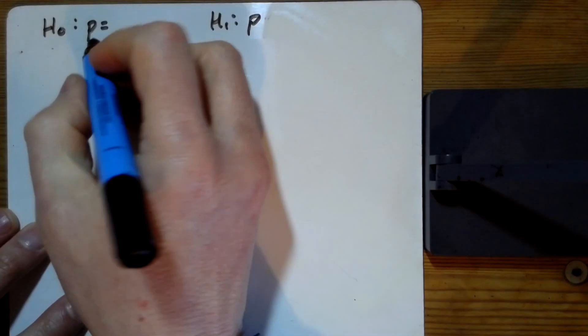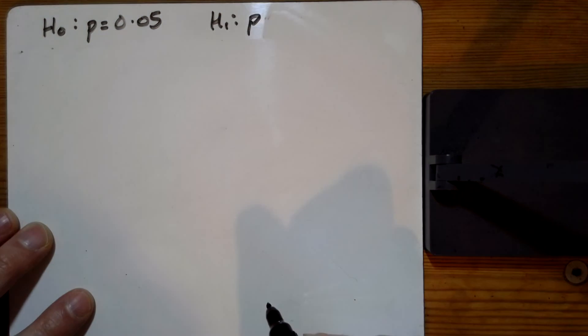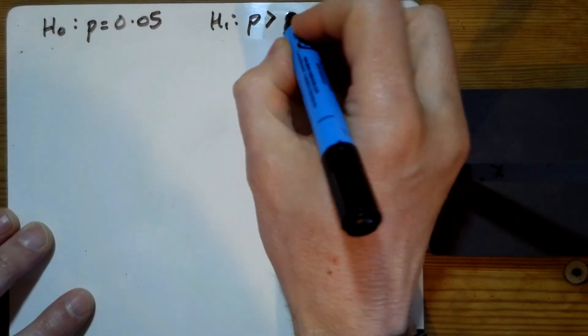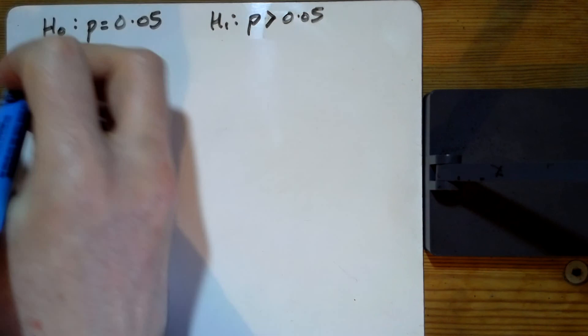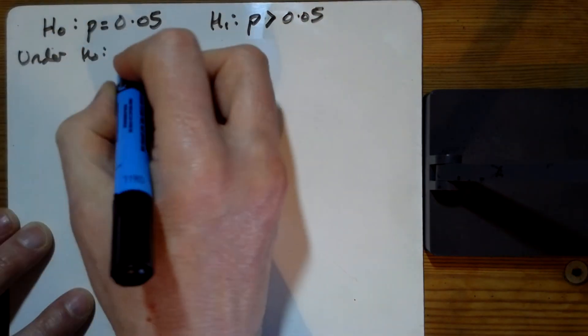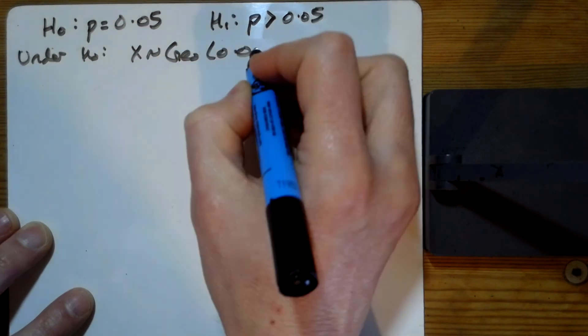On question 3, we've been given H0 is that the probability is 5%, 0.05, and we want to know what's the alternative - is it greater than 5%? So under H0, X is a geometric with the probability of success 0.05.